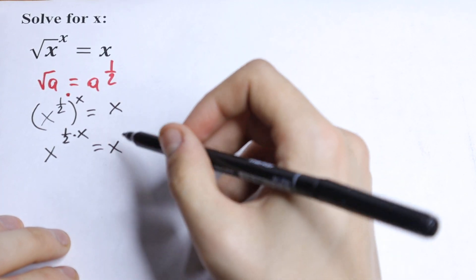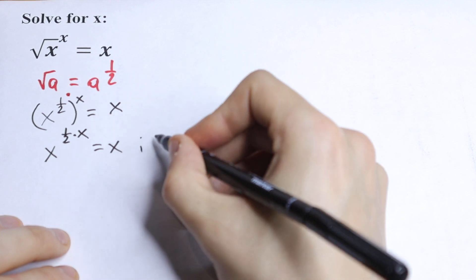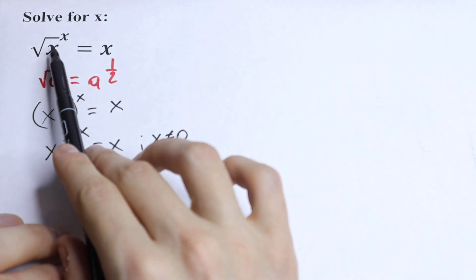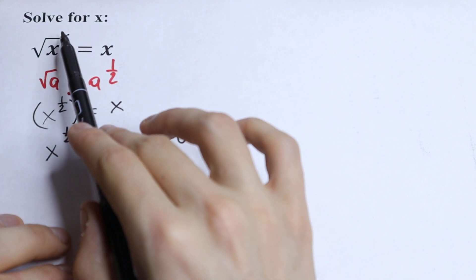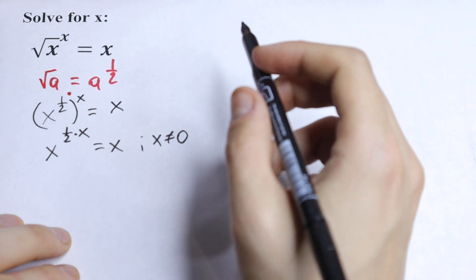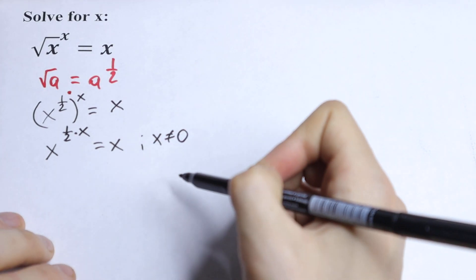We know that this x is not equal to 0, because right here if we put x equal to 0, we will have 0 to the 0 power equal to 0, which is not correct. So we can divide both sides by x.